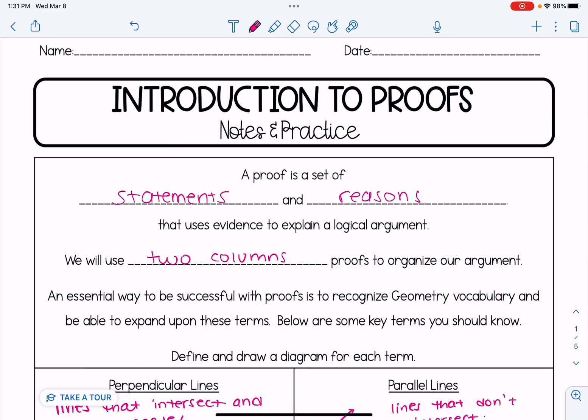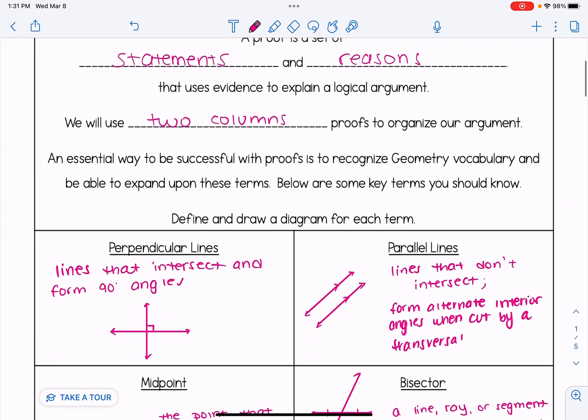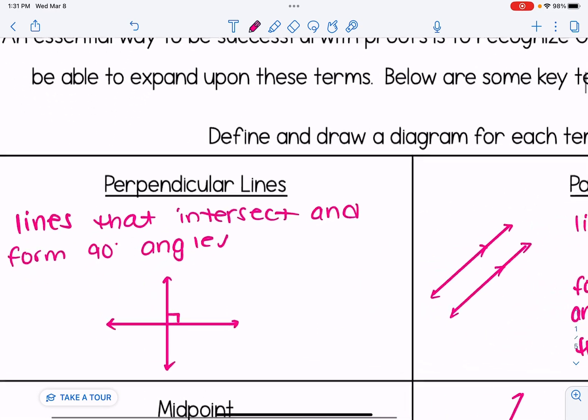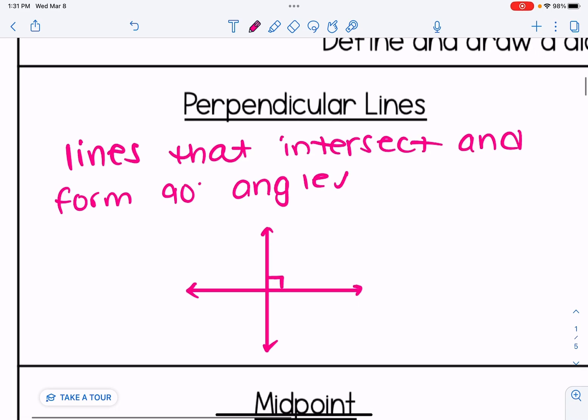An essential way to be successful with proofs is to recognize geometry vocabulary and be able to expand upon these terms. Below are some key terms that you should know. I've already gone ahead and defined and drew a diagram for each one, so we'll just take a quick look at each one of them.